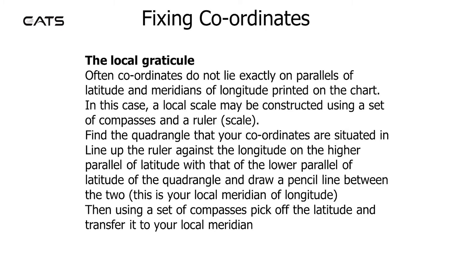Fixing coordinates — the local graticule. Often coordinates do not lie exactly on parallels of latitude and meridians of longitude printed on the chart. In this case a local scale may be constructed using a set of compasses and a ruler. Find the quadrangle that your coordinates are situated in. Line up the ruler against the longitude on the higher parallel of latitude with that of the lower parallel of latitude within the quadrangle and draw a pencil line between the two. This is your local meridian of longitude. Then using a set of compasses, pick off the latitude and transfer it to your local meridian.